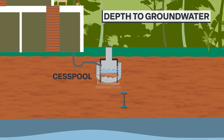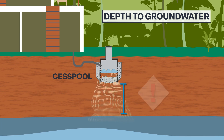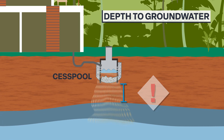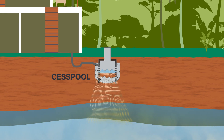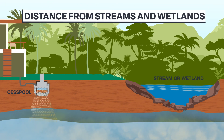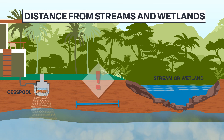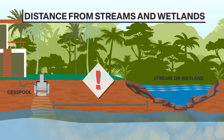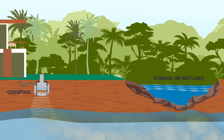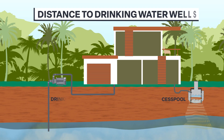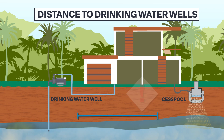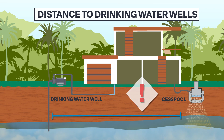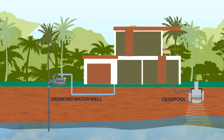Factors like depth to groundwater tell us whether a cesspool may leach into the groundwater table. Distance from streams and wetlands indicates whether cesspool waste has high potential to pollute sensitive ecosystems. Important human health indicators like distance to drinking water wells considers the potential for drinking water sources to become contaminated by human waste.